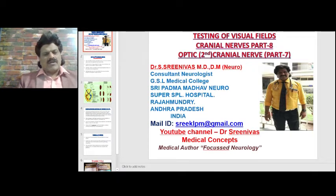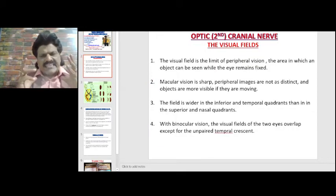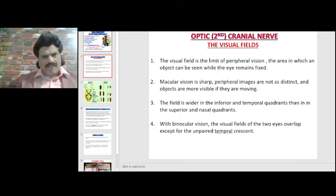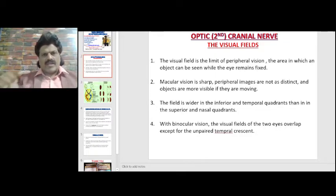Today we are going to talk about a very interesting topic: the testing of visual fields. What exactly is the visual field? The visual field is the limit of the peripheral vision — the area in which an object can be seen while the eye remains fixed.